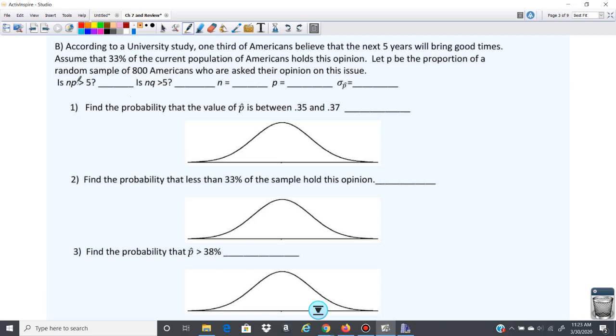So first, let's check the sample size. So NP is greater than five. So P, first of all, we'll put that in here. P is going to be this here, 33% of populations, or Americans, that believe we're going to have good times. Q, we need Q. If P is 0.33, what is Q going to be? Good, 0.67. 0.33 plus 0.67 will give us the one there.